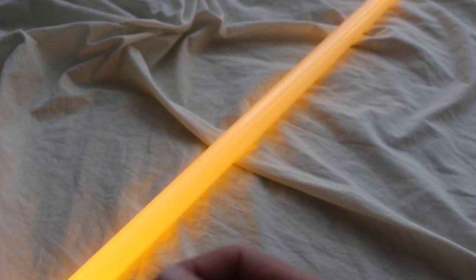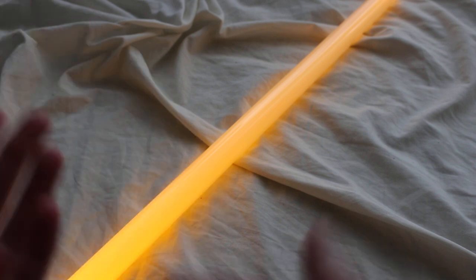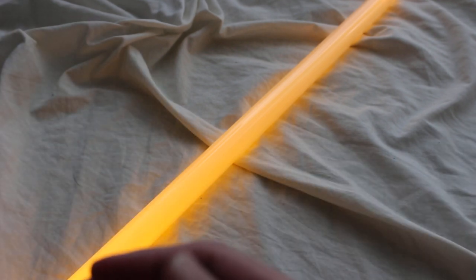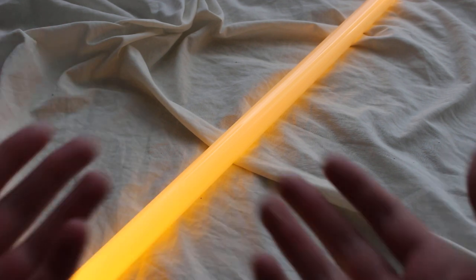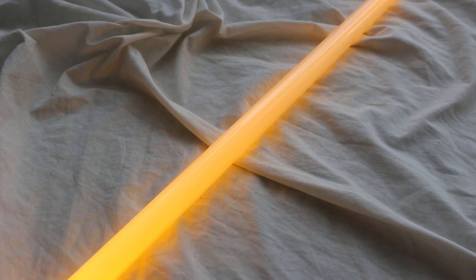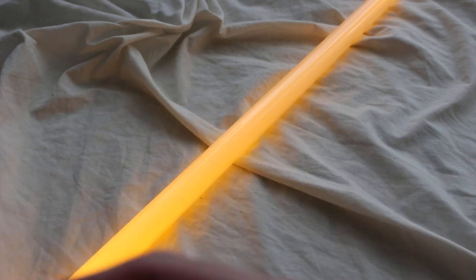So far, orange lightsabers only appear in one place: the video game Star Wars Jedi: Fallen Order, as one of the blade color options for the playable character Cal Kestis. It's not the default color, but it is one of the blade color options in the game. That's all we've got for Star Wars canon.